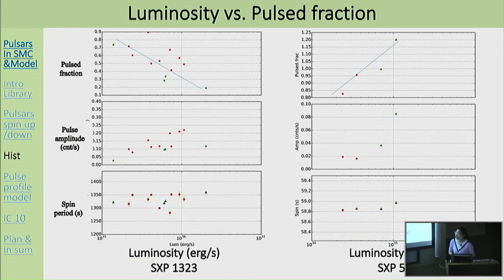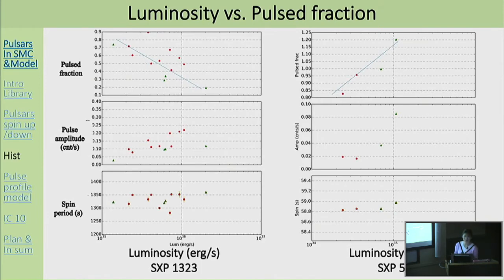We are also working on the relationship between luminosity and pulse fraction for each pulsar. The variation of pulse fraction shows two different trends as luminosity increases: SXP3023 shows pulse fraction decreasing as luminosity increases, while SXP59 shows the opposite trend.